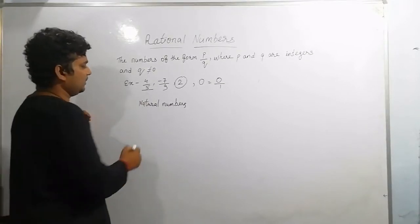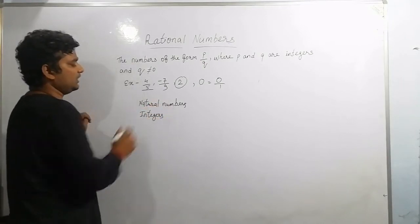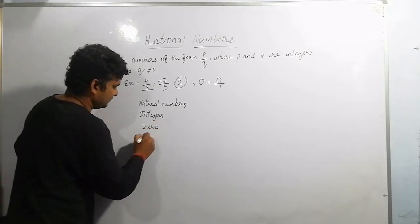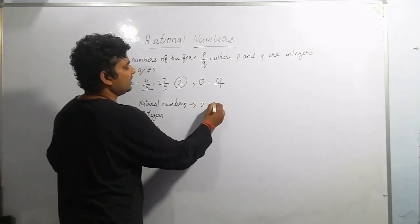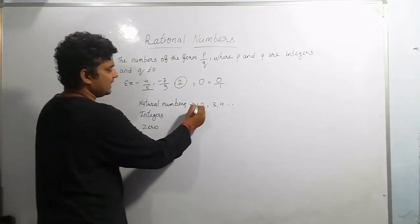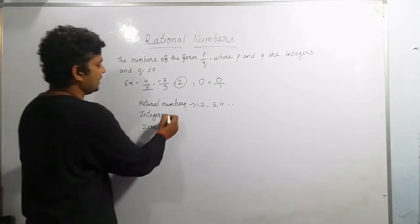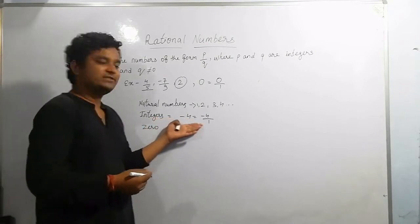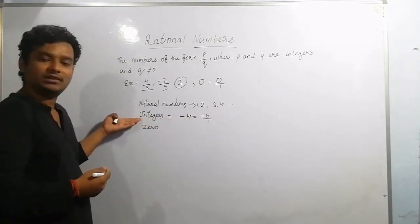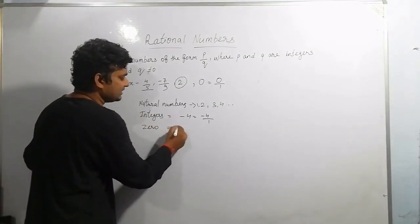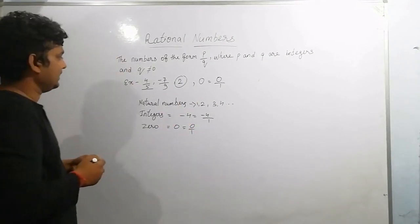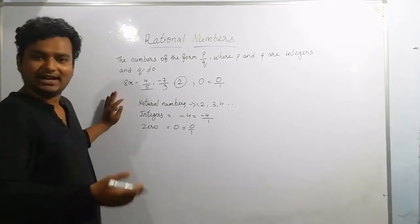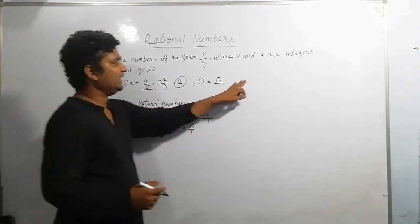All natural numbers — like 2, 3, 4, any number — are rational numbers. Coming to integers, minus 4 can be represented as minus 4 divided by 1, so it is also a rational number. Negative as well as positive numbers — whatever comes under integers — are rational numbers. Zero equals 0 divided by 1, also a rational number. Each and every fraction is also a rational number.